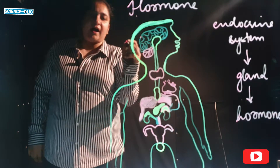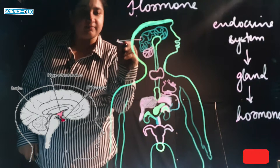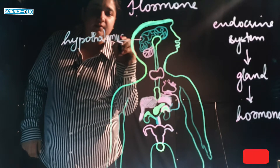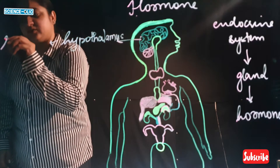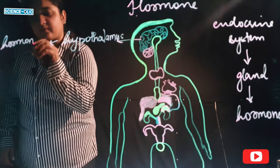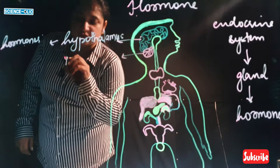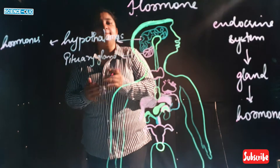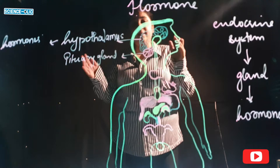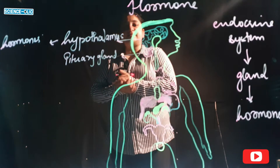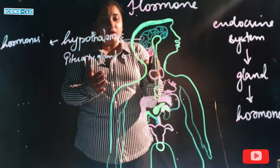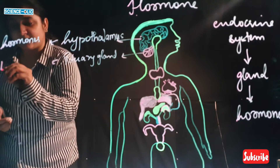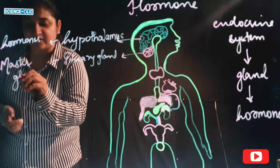The first part is the hypothalamus, present in the brain — this helps to secrete different hormones. Next is the pituitary gland, also called the master gland. It is known as the master gland because it secretes hormones, controls all the glands that secrete hormones, and provides negative feedback.